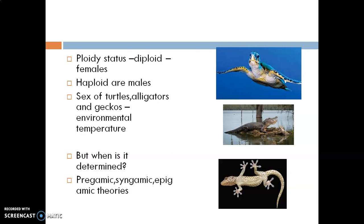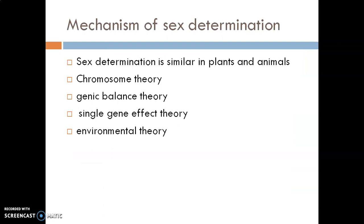The timing of sex determination during the ontogeny of an organism has also been a debated problem. Three speculations are advanced to explain it: pre-gamic theory, syngamic theory, and epigamic theory. Pre-gamic theory holds that sex is determined at the gametic level before fertilization. Syngamic theory holds that sex is determined at the zygotic level at the time of fertilization. Epigamic theory states that sex is determined at the embryonic level after fertilization. Cytological evidences are concordant only with syngamic theory.